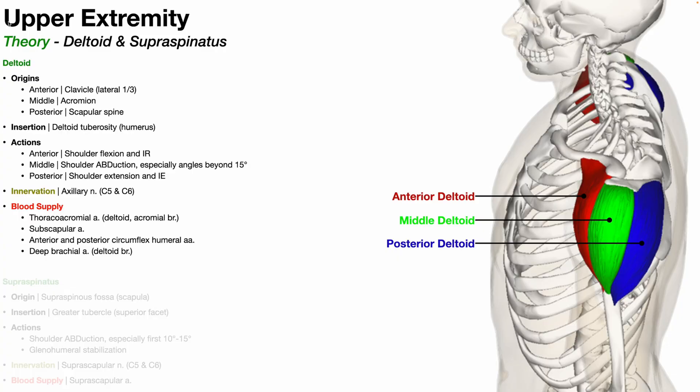In this video, we're going to be discussing several muscles of the shoulder, in particular the deltoid and the supraspinatus muscles. Collectively, these two muscles are the two major shoulder abductors.